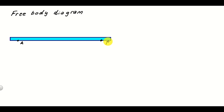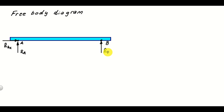To solve this problem, we first need to construct a free body diagram of our beam. We do this by removing the supports at point A and at point B. Instead of these supports, we add reaction forces. At point A, we add a vertical reaction force RA and a horizontal reaction force RAx. At point B, we have only a vertical reaction force RB. Don't forget to also add the external force F. This is the final form of the free body diagram.